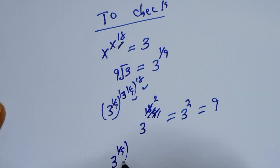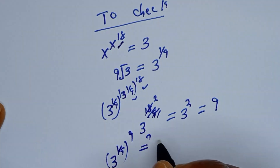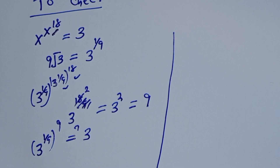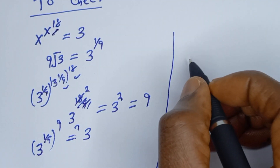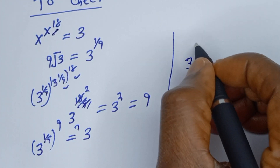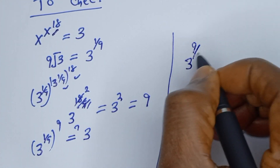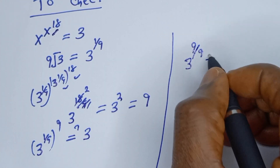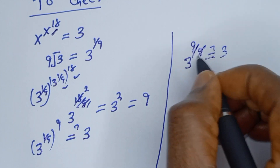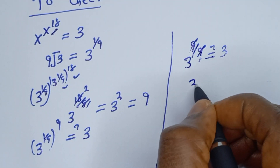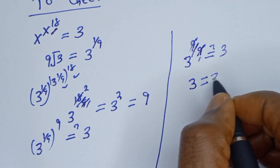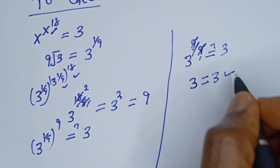Now replacing back, we have 3 to the power of 1 over 9, to the power of 9, which must equal 3. From the exponential rule, this is the same as 3 to the power of 9 over 9, which must equal 3. The 9s cancel, giving 3 equals 3, which is true.